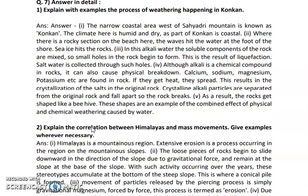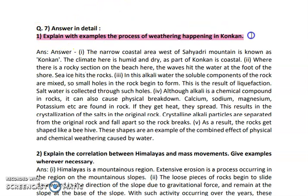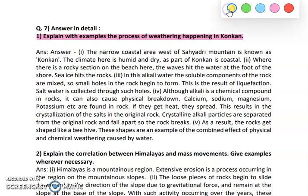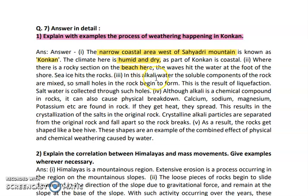The last question of this exercise is question number 7 — answer in detail. The first question is: explain with example the process of weathering happening in Konkan. The climate in Konkan is very humid with the presence of salt in the soil, and it has hot climate as it is very close to the coastal area — it is a narrow coastline of the Western Sahyadri Mountains. They have a large amount of heat and salt which starts bleaching the rock. The alkali water, which has soluble components in the rocks, mixes into small holes in the rock and begins to form, resulting in liquefaction.